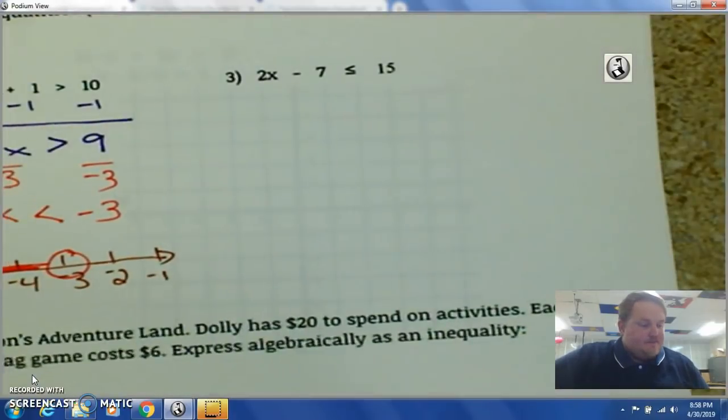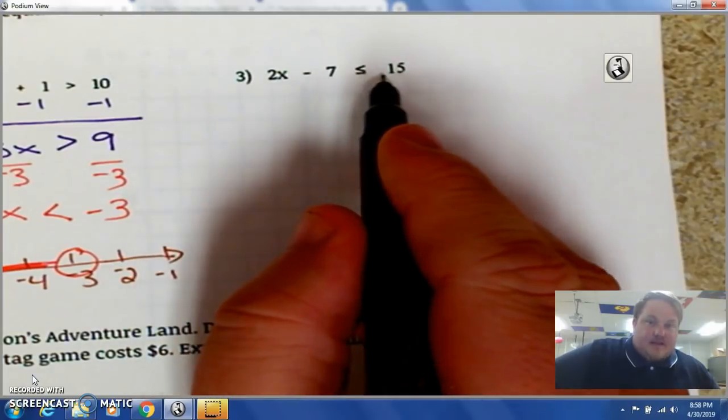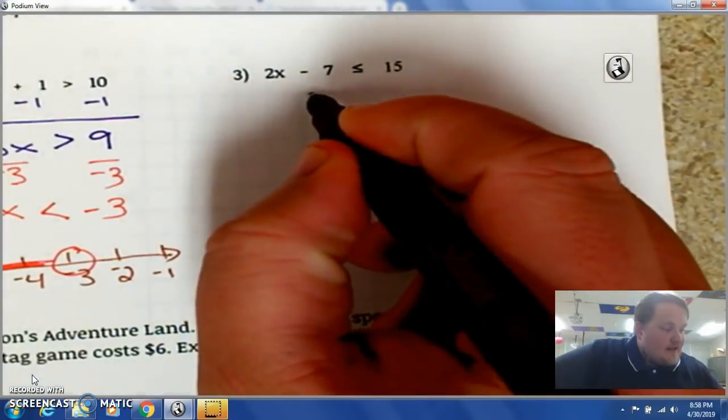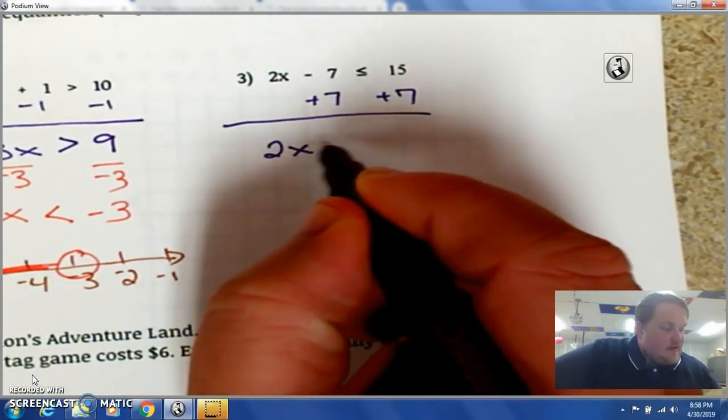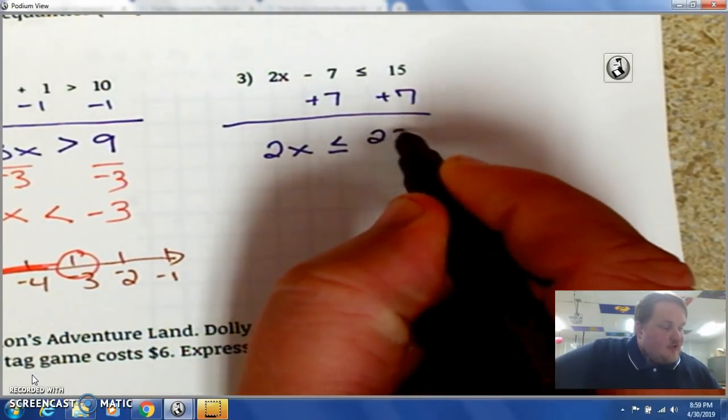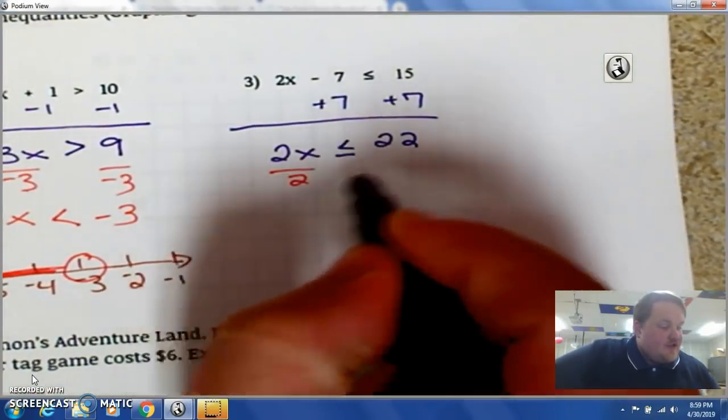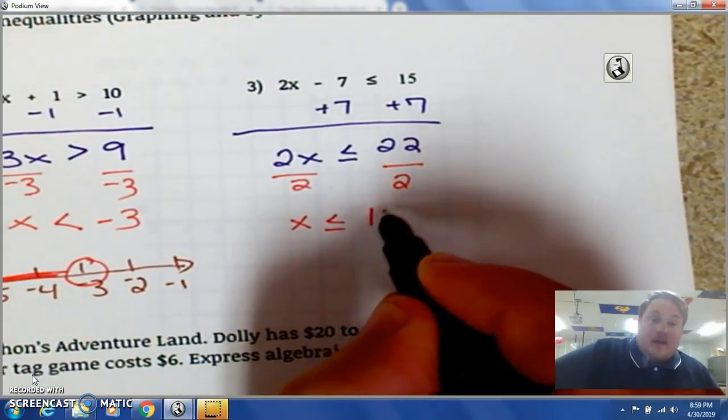Number 3. Here I have -2x minus 7 is less than or equal to 15. So, in this case, I'm going to add 7. I get -2x is less than or equal to 22. Dividing by a positive 2 so the sign stays the same. And x is less than or equal to 11.